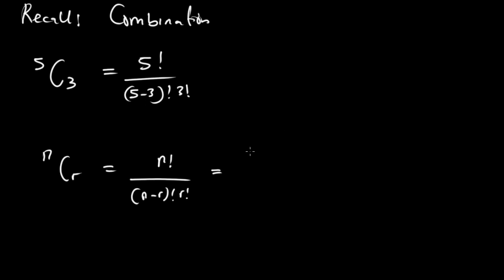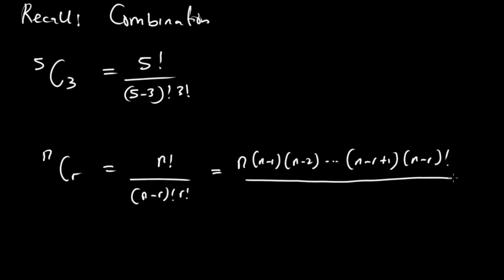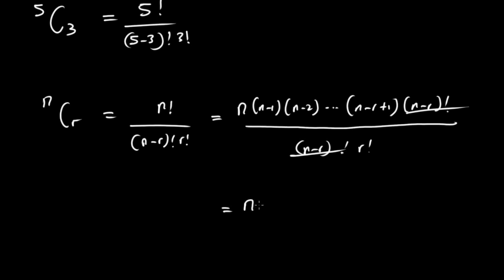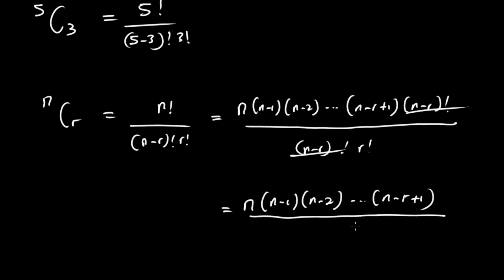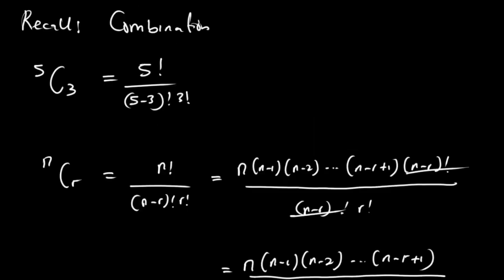To generalize this, whenever we have nCr it is n! / ((n−r)! · r!). Expanding the numerator, n! is n × (n−1) × (n−2) × ... × (n−r+1) × (n−r)!. The (n−r)! cancels at the denominator, and finally we have nCr = n(n−1)(n−2)···(n−r+1) / r!.